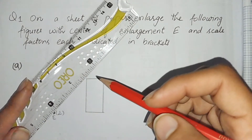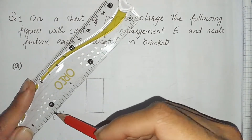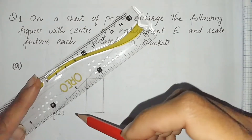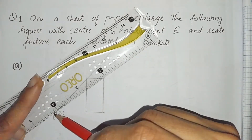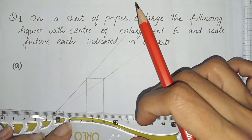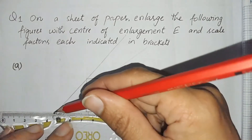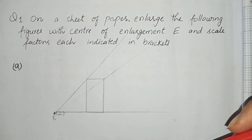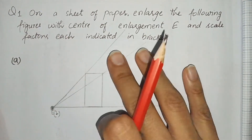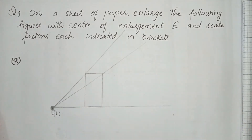For transforming the image, first we have to draw lines from the center through each corner — the first corner, the second corner, the third corner, and the fourth corner. We have to enlarge the figure in the area defined by drawing these lines.